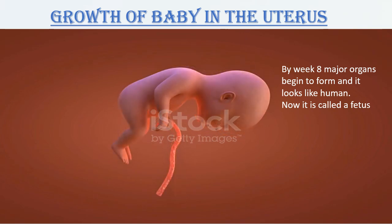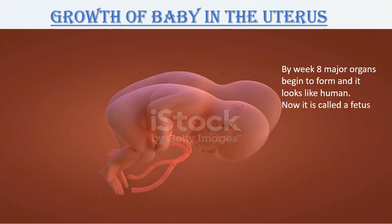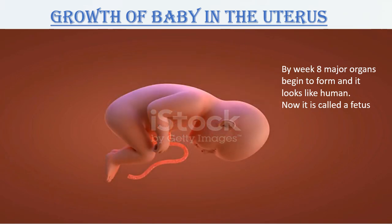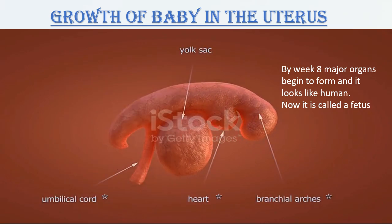During the first and second months, eyes, ears, arms, and legs begin to form. The baby is very tiny. From the third to the fourth month, the face begins to form, and other organs like the kidney and liver also begin to function, and the baby can move inside.